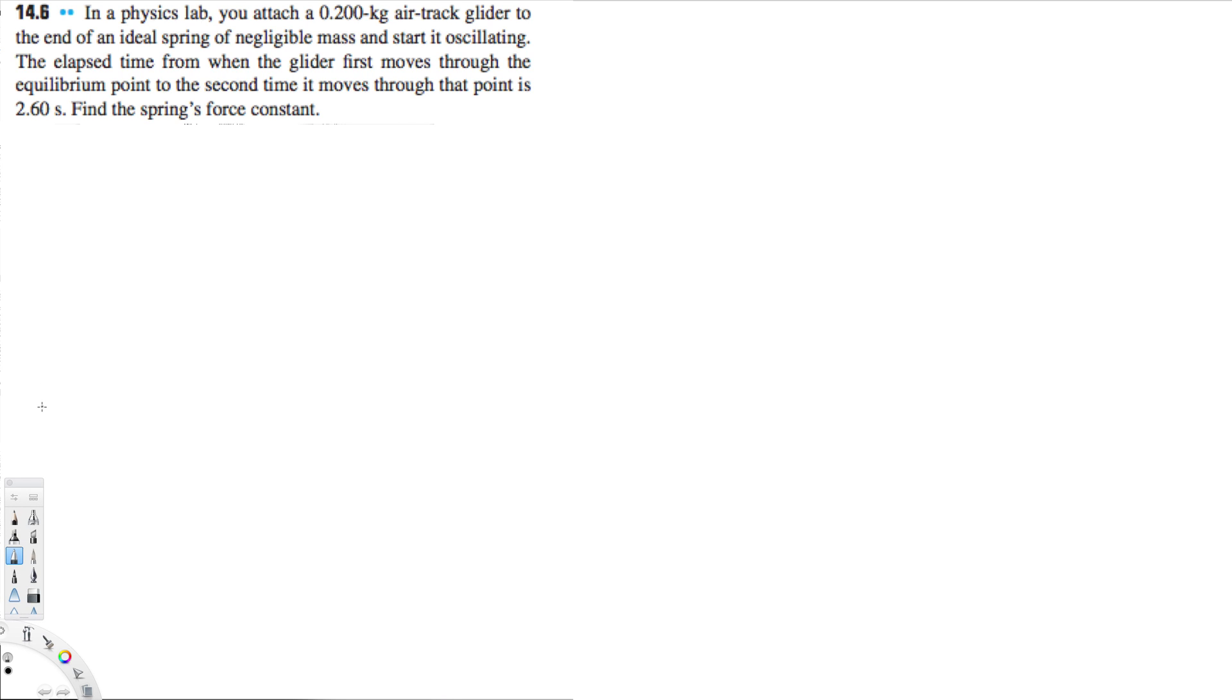Hey guys, let's do this problem right here. The question is asking: In the physics lab, you attach a 0.2 kilogram air track glider to the end of an ideal spring of negligible mass and start it oscillating. The elapsed time from when the glider first moves through the equilibrium point to the second time it moves through that point is 2.60 seconds. They are asking for k, find the spring force constant.